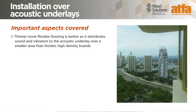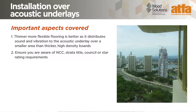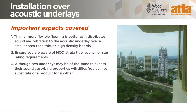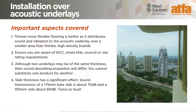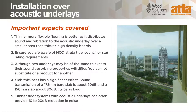Delivering the appropriate acoustic performance in high-rise dwellings is important, and an understanding of the requirements and methods is essential. Remember no two projects are the same. Key points to remember: one, thinner, more flexible flooring is more effective, as it distributes sound and vibration to the acoustic underlay over a smaller area than thicker, high-density boards. Two, ensure you are aware of the NCC, strata title, council or star rating requirements. Three, although two underlays may be of the same thickness, their sound-absorbing properties will almost certainly differ — you cannot substitute one product for another. Four, slab thickness has a significant effect: sound transmission of a 175mm bare slab is about 70 dB, whereas a 150mm slab is about 80 dB — that's twice as loud. And five, timber floor systems with acoustic underlays can often provide 10 to 20 dB reduction in noise.